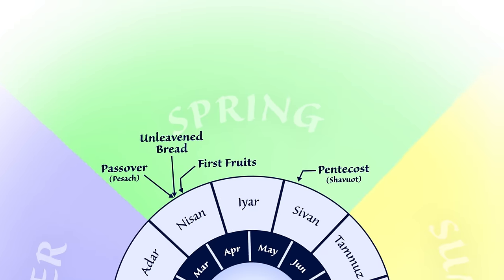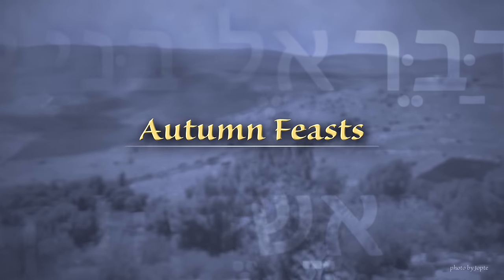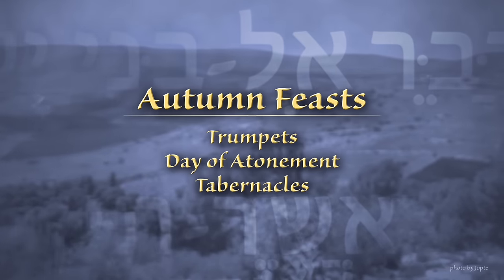After the spring feasts, there is a period of three months before the fall feasts. This interval corresponds to the church age, which we're still in. Now let's look at the autumn feasts.